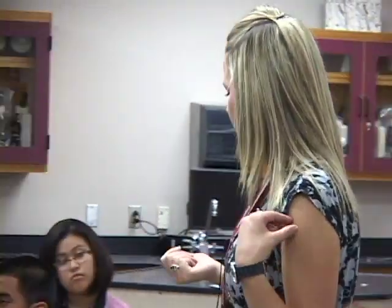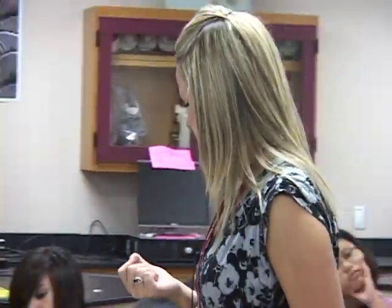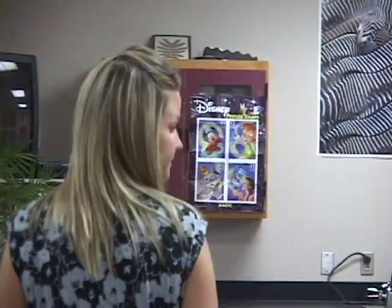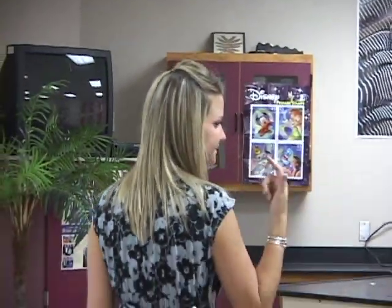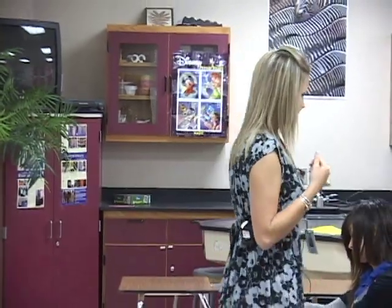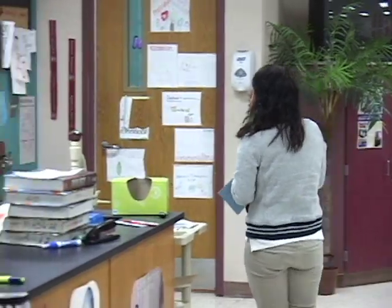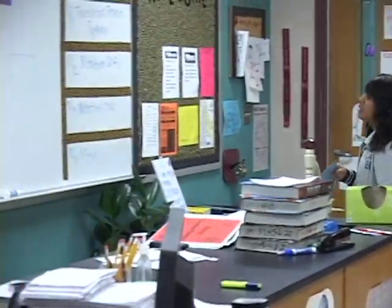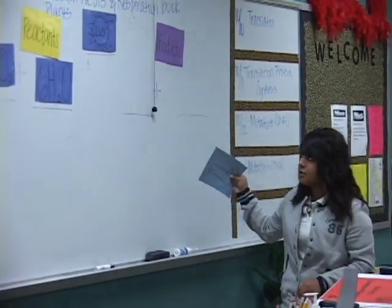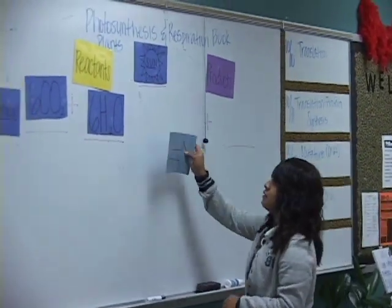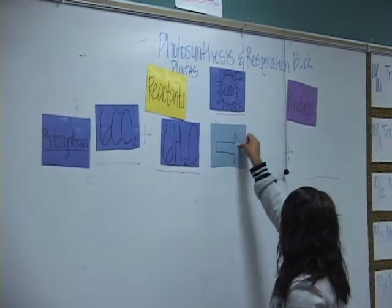I'm missing something in between my two equations. What has to be in between? An arrow. Who has one of my arrows? Thank you — up there, underneath the sun. Always point to the right.